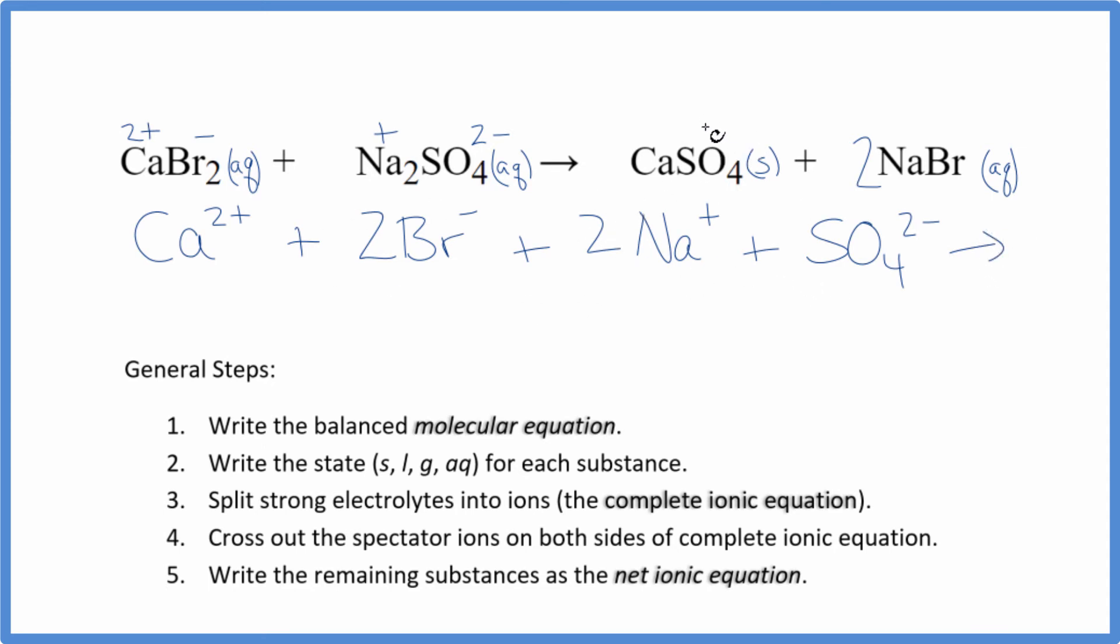In the products, we said calcium sulfate's a solid. We do not split solids apart in net ionic equations, so we just leave it together. It's together at the bottom of the test tube, so it kind of makes sense. Plus, we have the plus and minus here, 2 sodium ions, and then 2 bromide ions. So we have our complete ionic equation.